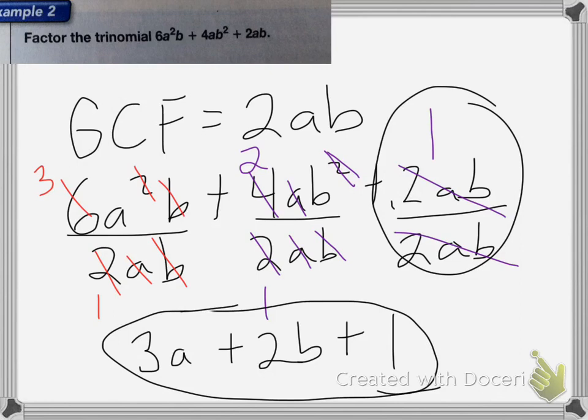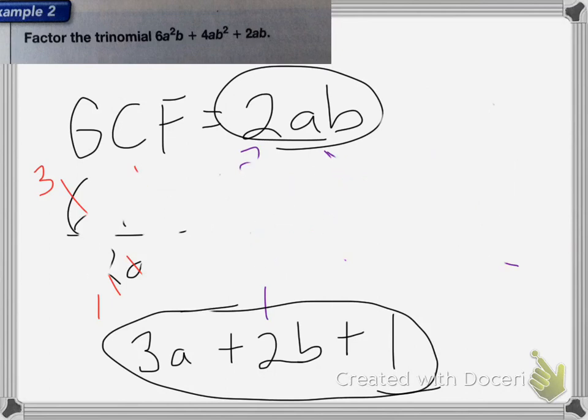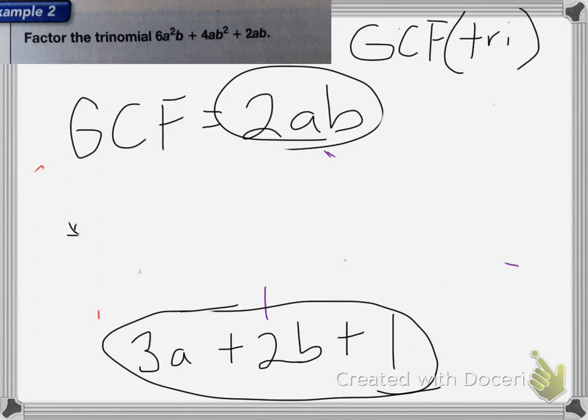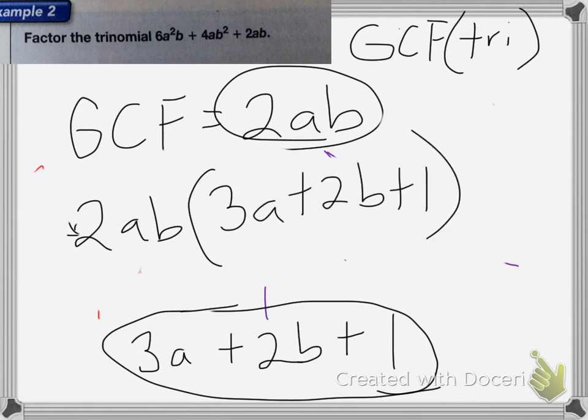So now we're going to rewrite this by, because we still have to put this factor back in. So when I rewrite it, I'm going to rewrite it as the greatest common factor times my remaining trinomial. So it would look like this. It would be 2ab times 3a plus 2b plus 1. So this is it all factored out.